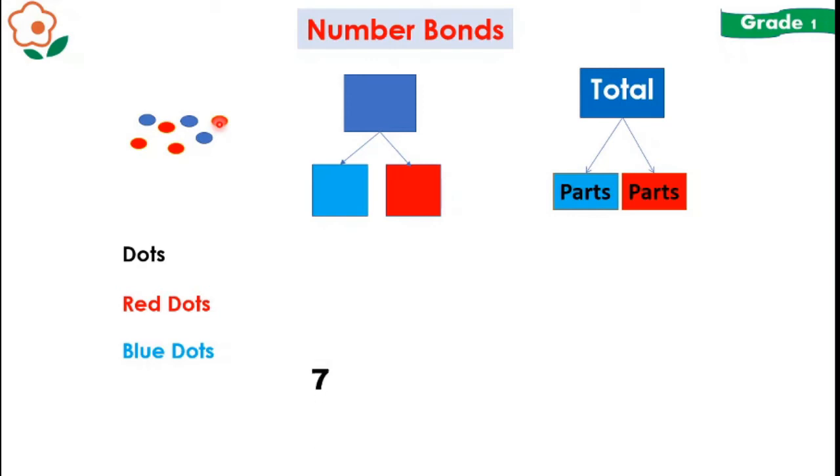So we have 7 total dots or you can say that 7 total objects. Now count the red ones. 1, 2, 3, 4. So there are 4 red dots. Now how many dots are in blue color? Let's count: 1, 2, 3. So there are 3 blue dots.